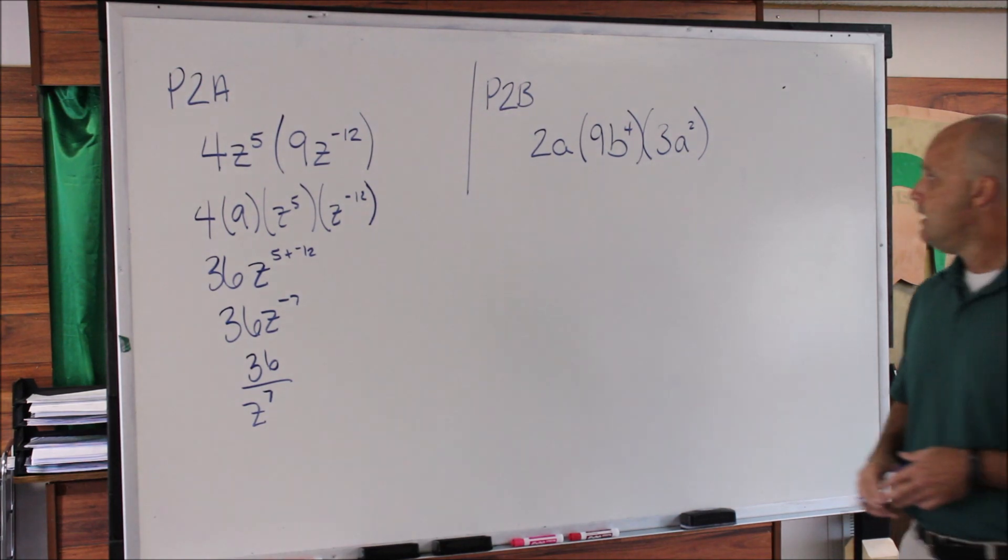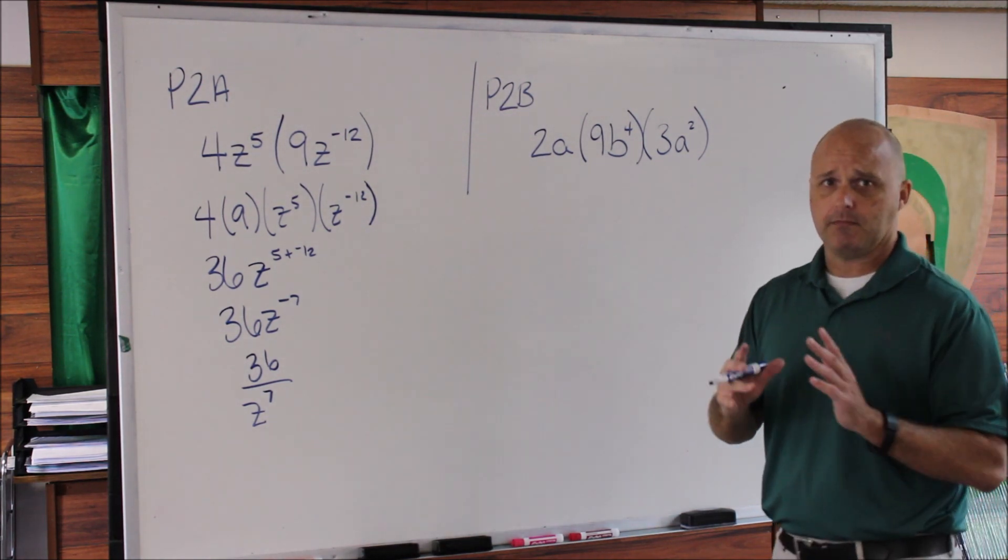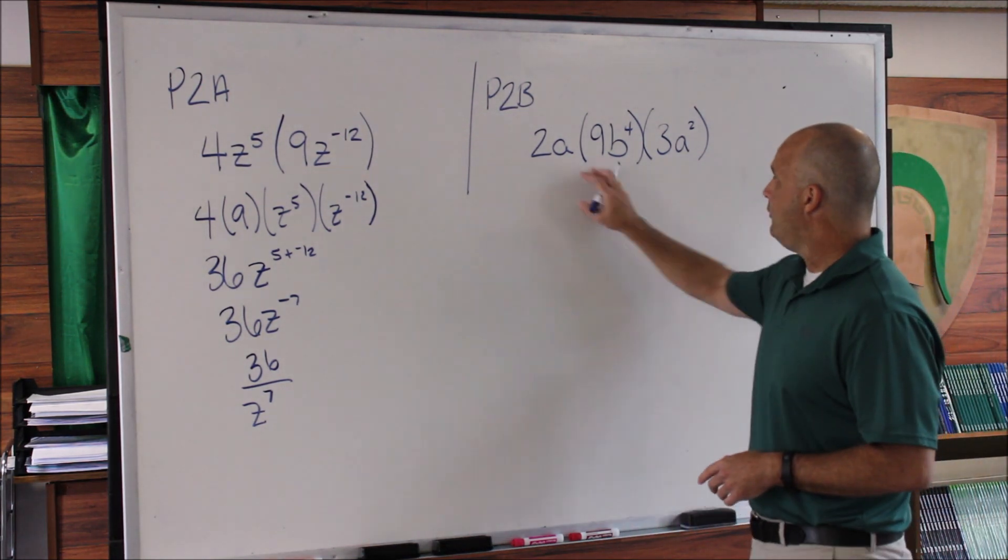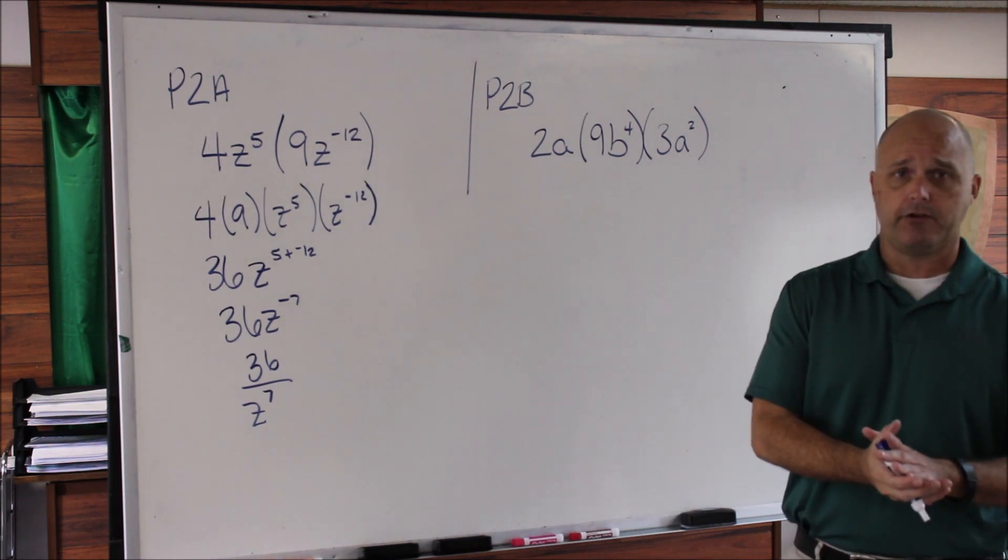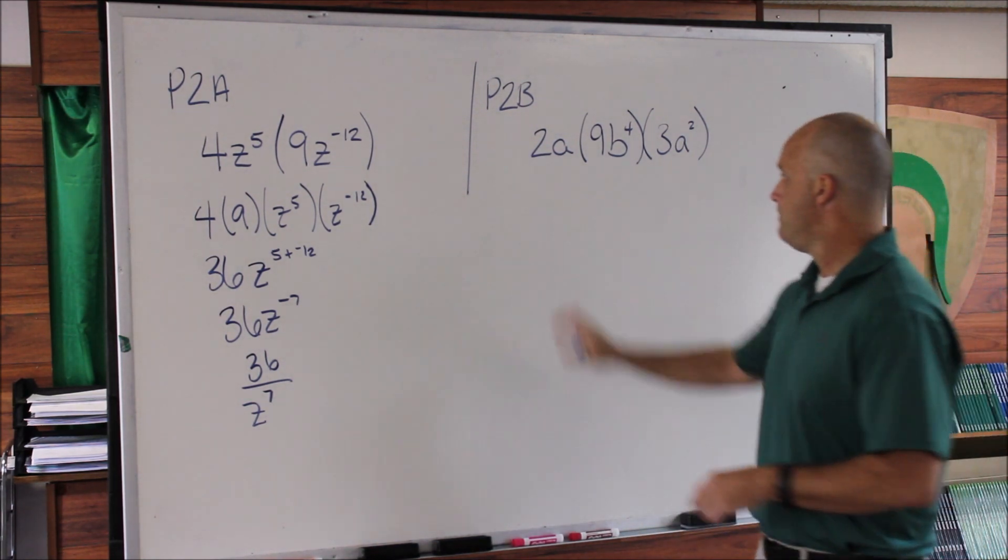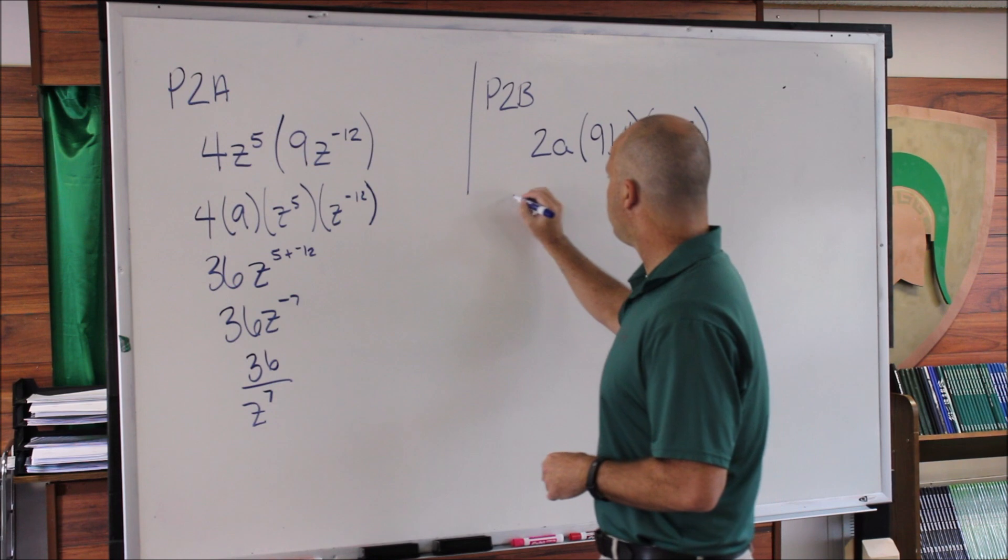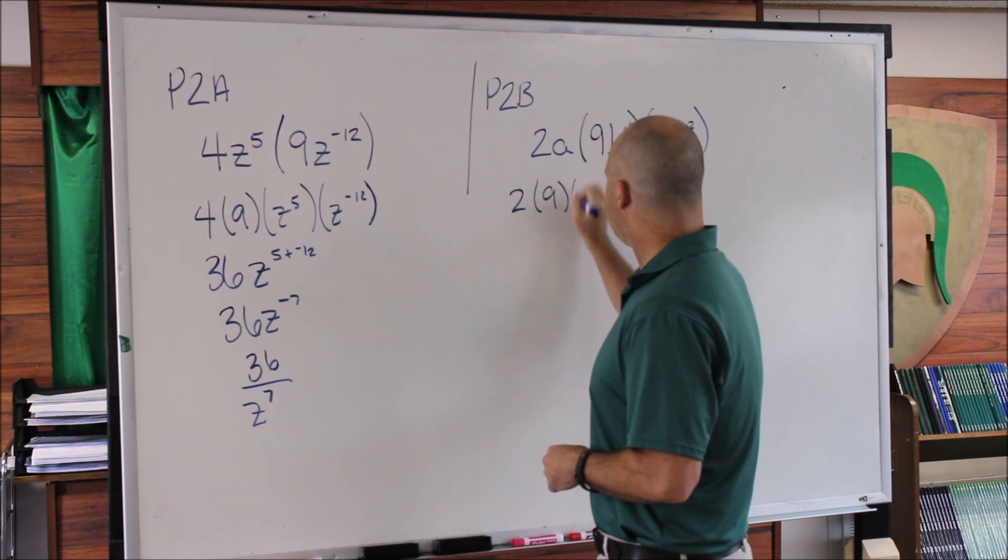On problem 2b, I'm going to work the same process. I'm going to take everything that's alike and put it next to each other. That way I can see what I've got to work with. So I'm going to take the 2, 9, and the 3 and put them all next to each other.